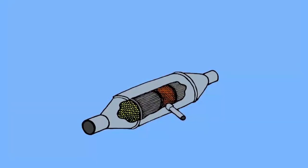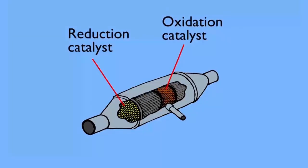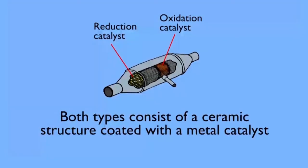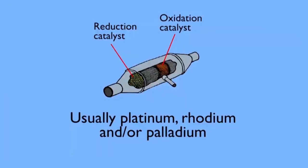In a catalytic converter, there are two types of catalysts at work: a reduction catalyst and an oxidation catalyst. Both types consist of a ceramic structure coated with a metal catalyst, usually platinum, rhodium, and/or palladium.